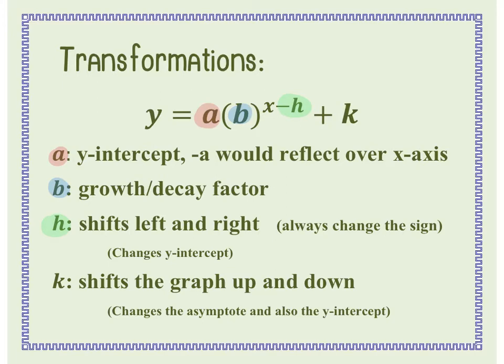K is going to shift the graph up and down. K is not in the exponent — it comes after the exponent, after a plus or minus. If it's plus, the graph goes up; if it's minus, it goes down. Whatever the k value is, that becomes your new asymptote. On the parent function the asymptote is y equals 0, but if you have a k value, the asymptote becomes that number.